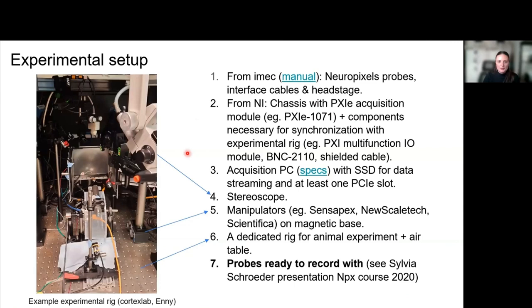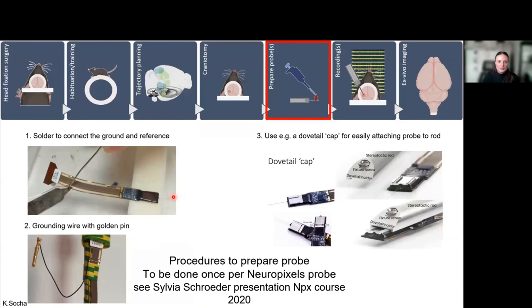Here's an example experimental setup. We already covered this by Julie, but the other things I wanted to mention is that it's very useful to have a stereoscope or a microscope. We use the Sensapex manipulators on a magnetic Thorlabs base so that we're flexible in moving it around. A dedicated rig for animal experiments, including an air table, is quite essential, and you need to have the probes ready to record with. Silvia Schrader's presentation from the 2020 course goes into more detail. But in short, you want to connect the grounding reference and solder a grounding wire to that. At least in the past, we needed to cement this to a Dovo cap, which then goes on a rod that you can plug into your manipulator. More detailed procedures are on older courses and the website.